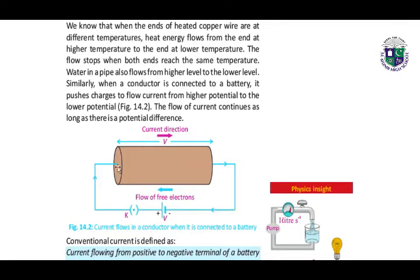Next, we have figure 14.2 — current flows in a conductor when it is connected to a battery. We know that when the ends of a heated copper wire are at different temperatures, heat energy flows from the end at higher temperature to the end at lower temperature. The flow stops when both ends reach the same temperature. Water in a pipe also flows from higher level to the lower level.